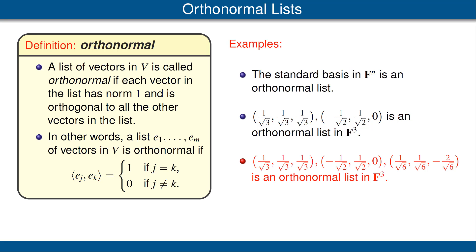Our third example, shown here, is another orthonormal list in F^3, this time of length 3. You should verify that each of these vectors has norm 1 — pause the video if needed — and then verify that the inner product of any two distinct vectors gives 0. Please pause the video and verify that.